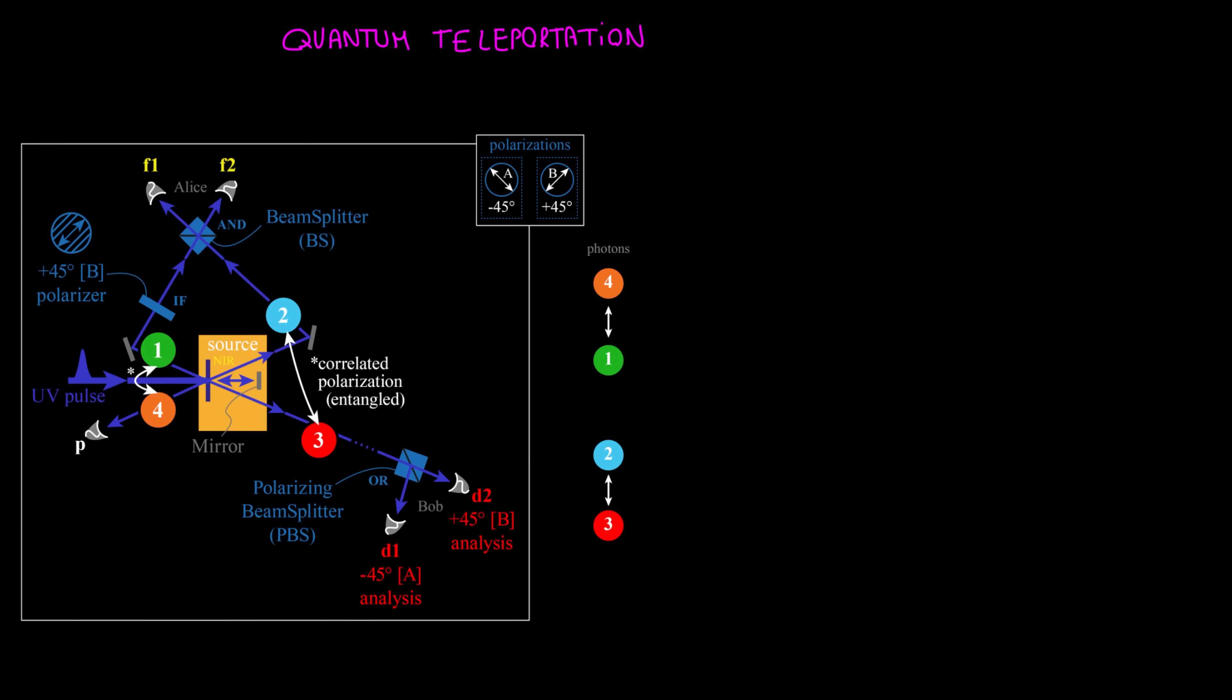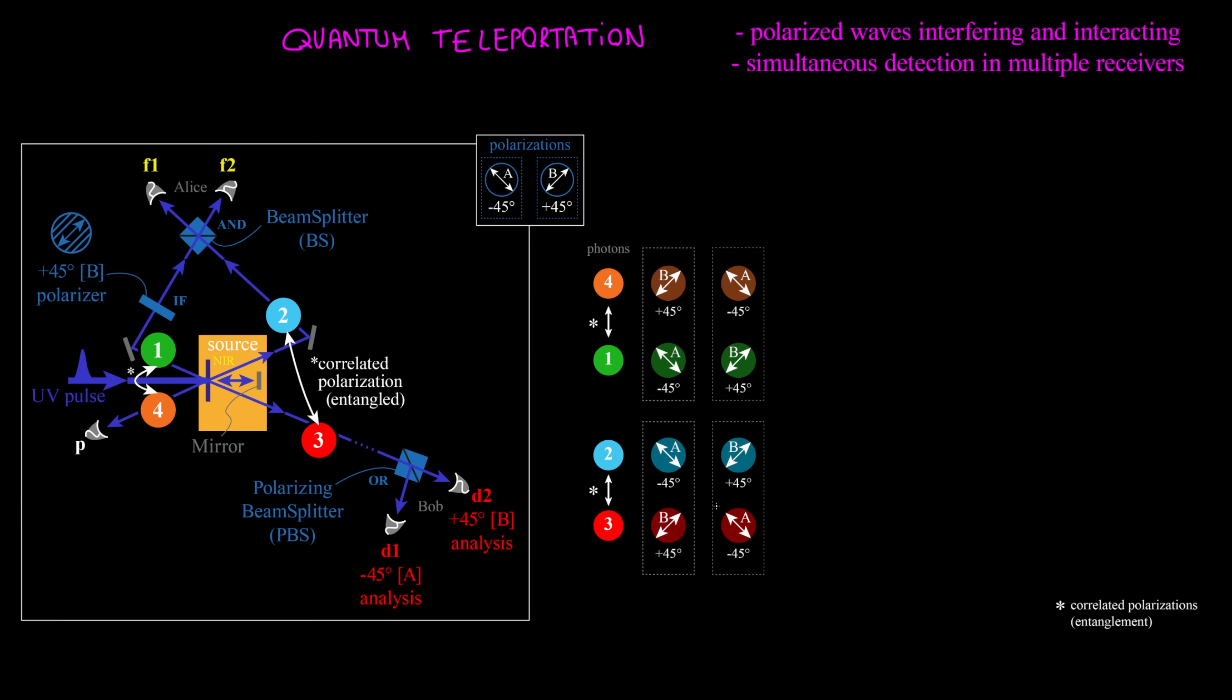Experimental quantum teleportation involves polarized waves interfering and interacting, and simultaneous detection in multiple receivers. Photons are emitted in pairs from the source. First couple is photon 2 and 3, then photon 1 with 4. Each pair of photons has a correlated polarization. If one is plus 45, the other is minus 45, or vice versa.